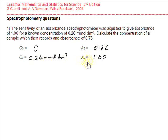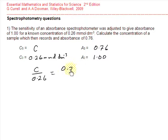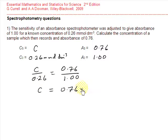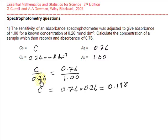We now have the variables to substitute into our proportionality equation. Taking the ratio of the concentrations, C divided by 0.26, will equal the ratio of the absorbances, 0.76 divided by 1. Rearranging this equation, C will equal 0.76 multiplied by 0.26, giving a value for the unknown concentration of 0.198 millimoles per decimetre cubed.